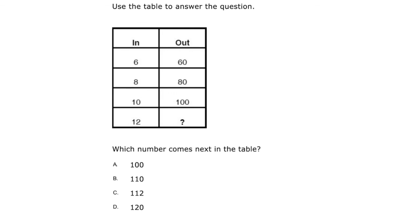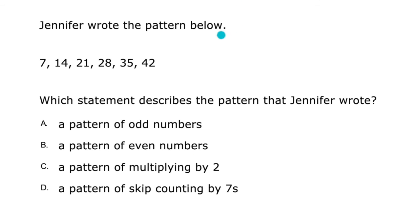What is the pattern of the shaded numbers? The options are: multiply by 3, multiply by 6, or multiply by 8. Read those numbers: 66 to 69, 72 to 75, 75 to 78. For the in-and-out machine: input 6 gives output 60, input 8 gives 80, input 10 gives 100 — so what comes from input 12? Finally, the pattern 7, 14, 21, 28, 35, 42 — which statement describes it: odd numbers, even numbers, multiply by 2, or skip counting by 7? Decide which pattern it is. Thank you!